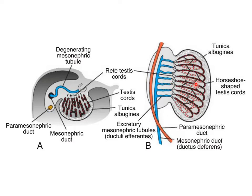The primordial germ cells continue with the rete testis cords. The ductuli efferentes are formed from excretory mesonephric tubules; they develop into efferent ductules which are connected to the rete testis cords. These efferent ductules enter the mesonephric duct. The mesonephric tubules and paramesonephric tubules are also visible in this section.